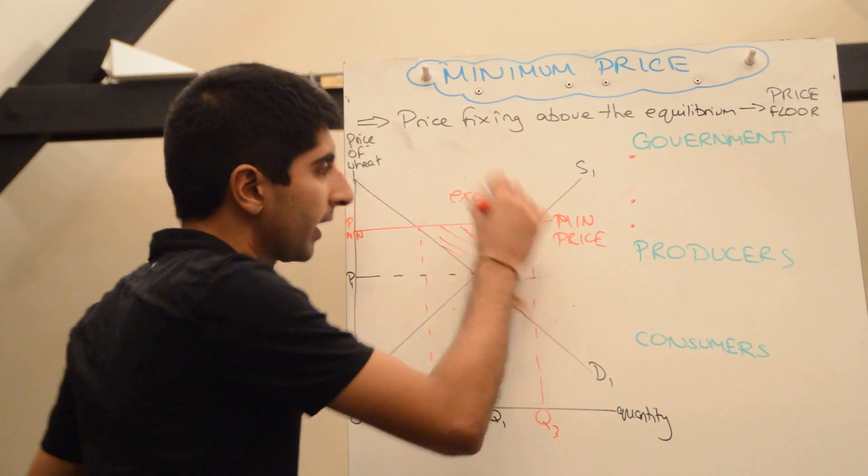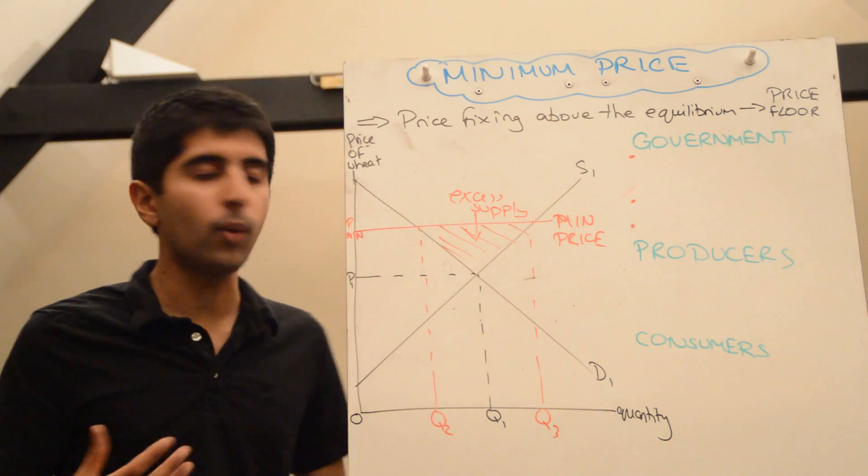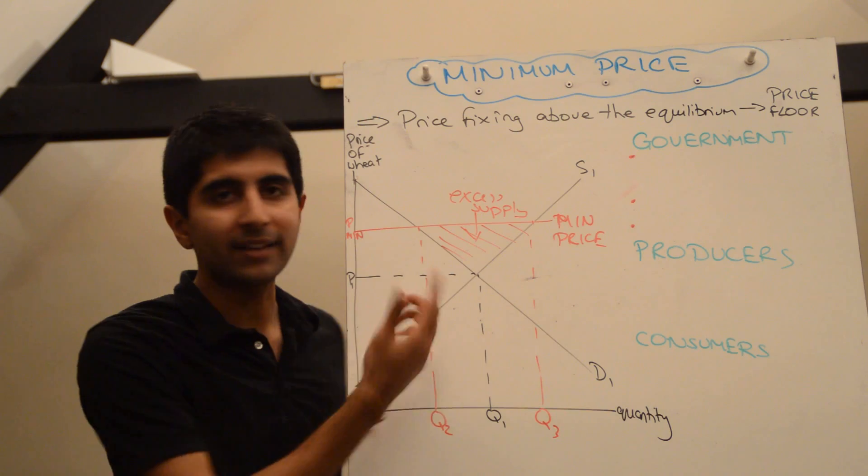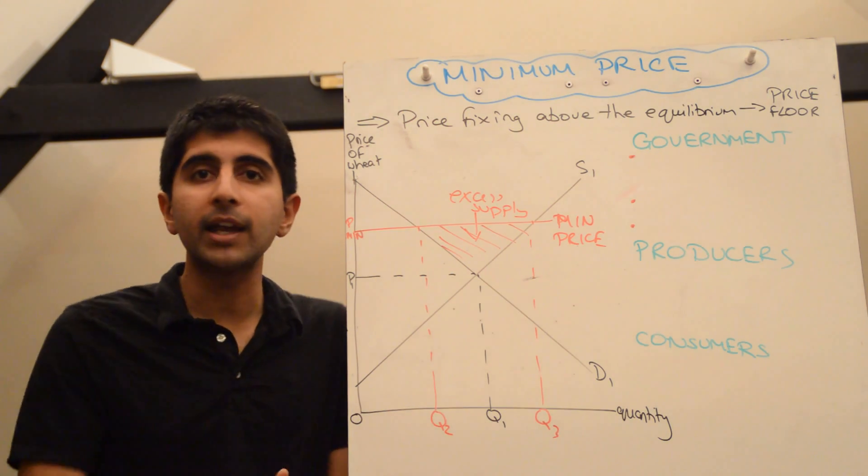Now, in a labor market, a minimum price can be set in terms of a minimum wage. The price of labor is just the wage. So if a minimum wage was set above the equilibrium, there would be an excess supply still. And that excess supply in the labor market is unemployment.